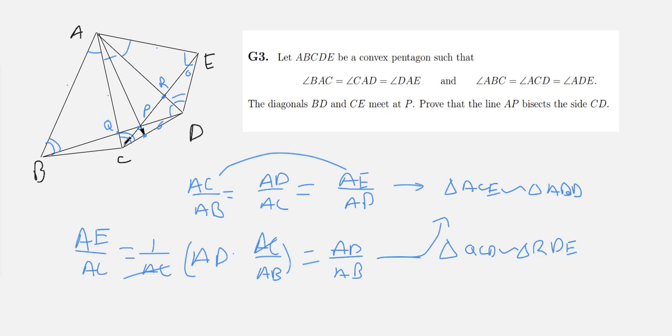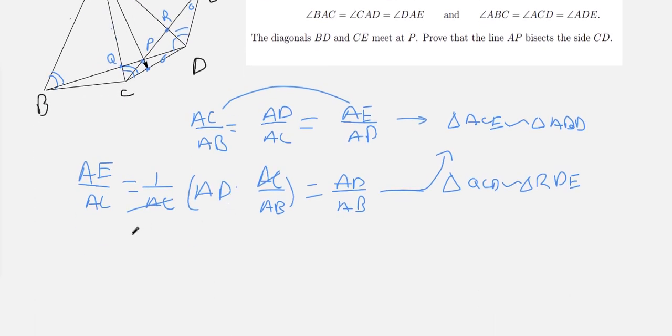Now, what we can say from this is that... I'm going to move down here so I have room to write. What we can say is that QC divided by RD, because these are corresponding lengths in the similar triangles that we've created here, QC over RD is equal to QD over RE. Because those are also both corresponding lengths.